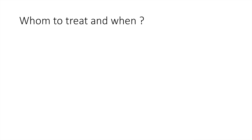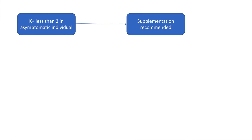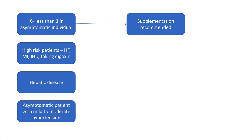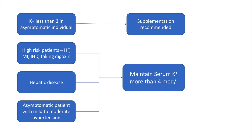Regarding whom to treat and when: if a patient is asymptomatic and has a serum potassium of less than 3, supplementation is recommended. However, if the patient is high-risk — with heart failure, myocardial infarction, ischemic heart disease, digoxin use, liver disease, or mild to moderate hypertension — we can consider targeting a serum potassium of 4 milliequivalents per liter.